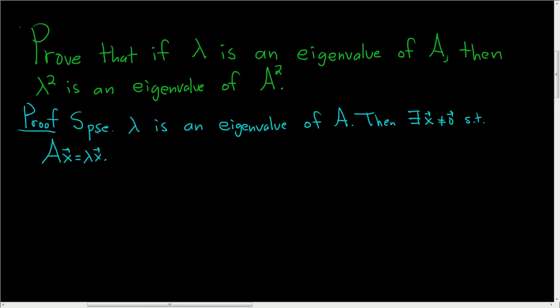And we have to show that lambda squared is an eigenvalue of A squared. So the natural choice to use for our eigenvector is x. Then we'll apply A squared to the vector x, and we can write this as A times A times the vector x, using associativity.